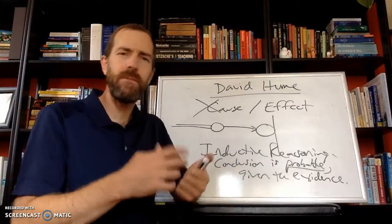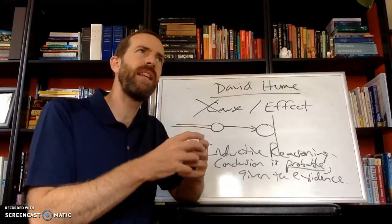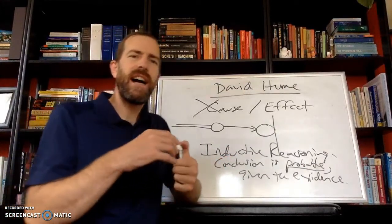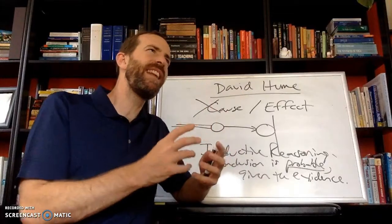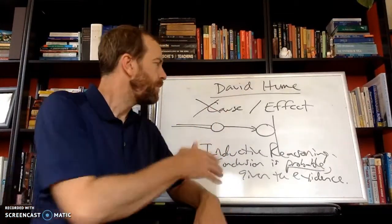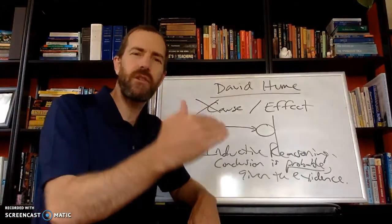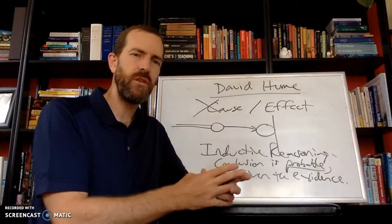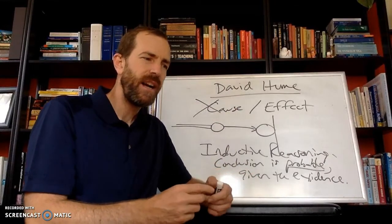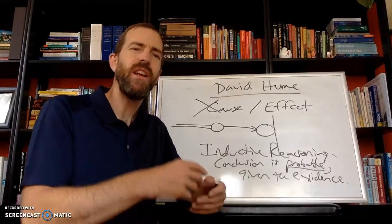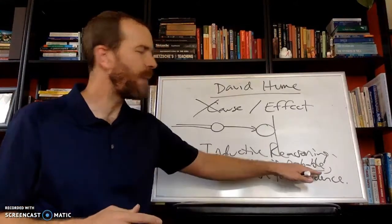So David Hume, this is an argument in epistemology, knowledge. So he's essentially saying that it's not necessarily the case that there is no such thing as cause and effect, but so long as we can't trace the very concept of cause and effect back to a sense impression, then we can't know it with certainty. So we know it via probability.